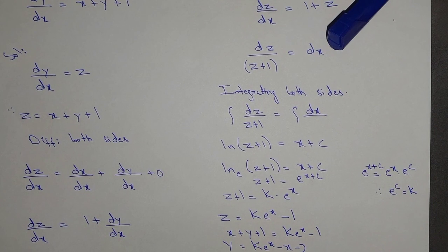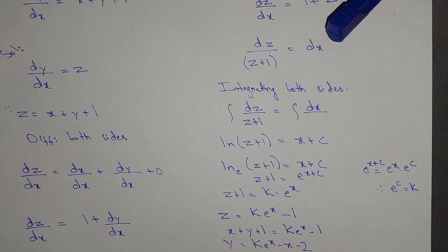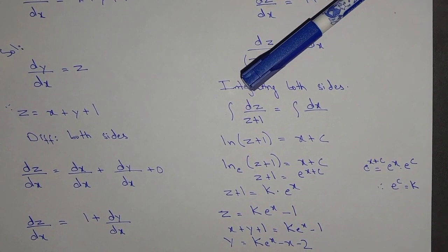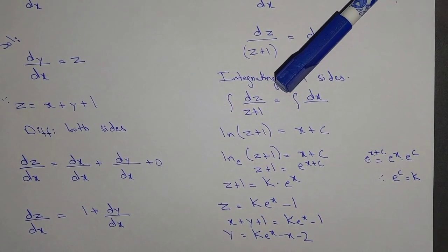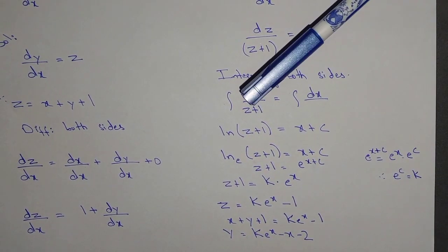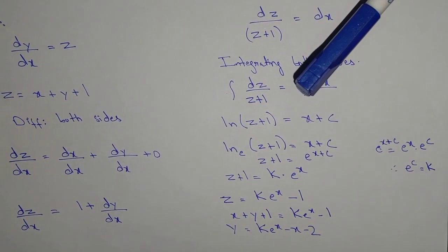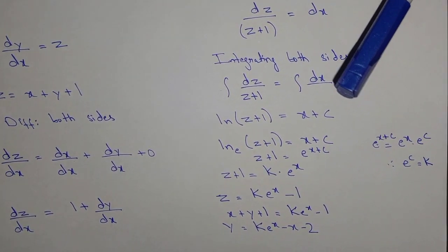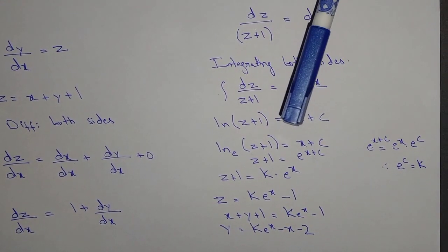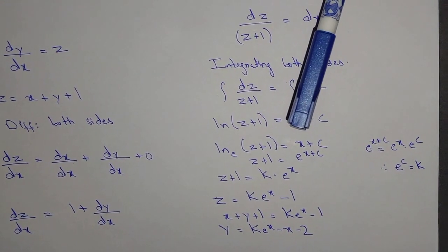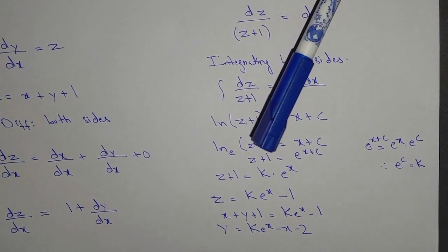All the values on the left hand side are in z and all the values on the right hand side are in x. So integral of dz over (z plus 1) equal to integral of dx, which gives ln|z + 1| equal to x plus c.